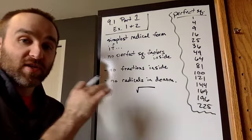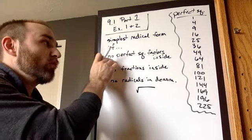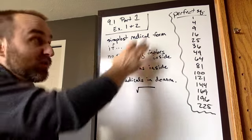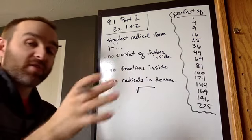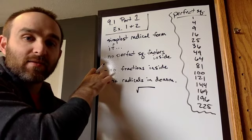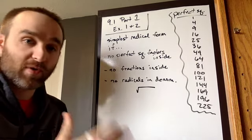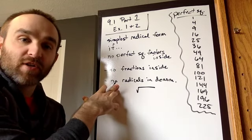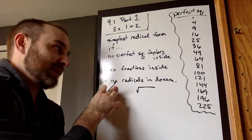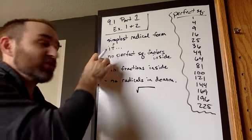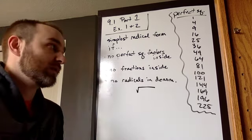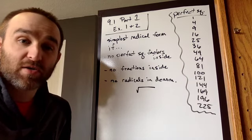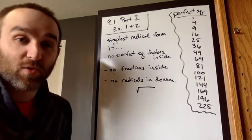A couple of things about simplest radical form. Something is in simplest radical form if there's no perfect square factors inside — and that's what we're going to concentrate on a lot. Other things: you can't have fractions inside, so you can't have the square root of one-fourth or one-half. You can't have a radical in the denominator — we're going to talk about that a lot in the next video for example four. So make sure you've got those perfect squares down. That's very important. A perfect square is when we take the square root of it and it gives us a whole number.